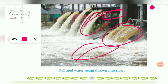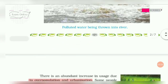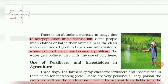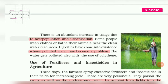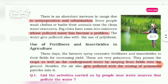You can see how polluted water is — it appears yellowish. Through drains it flows into rivers and the water quality rapidly deteriorates. There is also an abundant increase in water usage due to overpopulation and urbanization. Some people wash their clothes and animals near water resources, which is also a major problem.